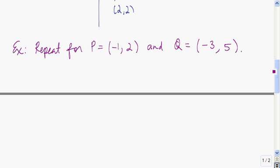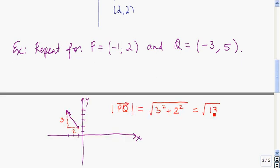For this next example, you should have constructed a right triangle with side lengths 2 and 3. Using the Pythagorean theorem to find the magnitude of the vector, that is equal to √13.